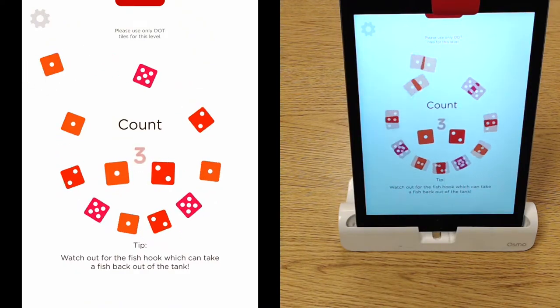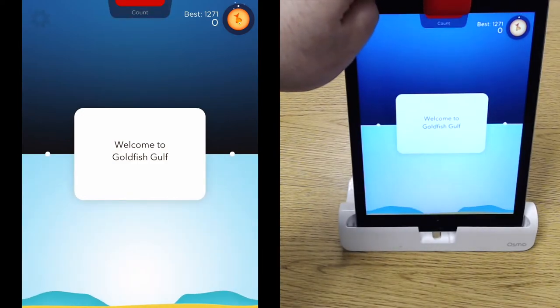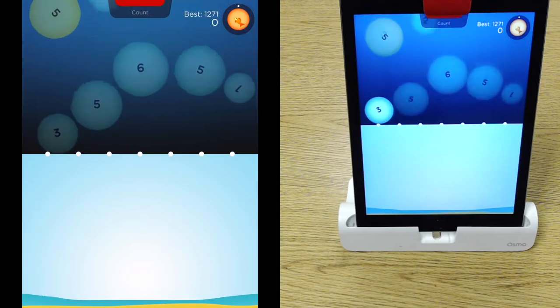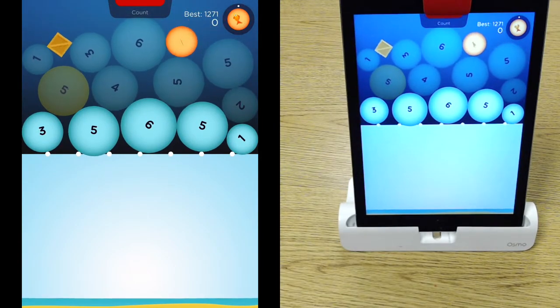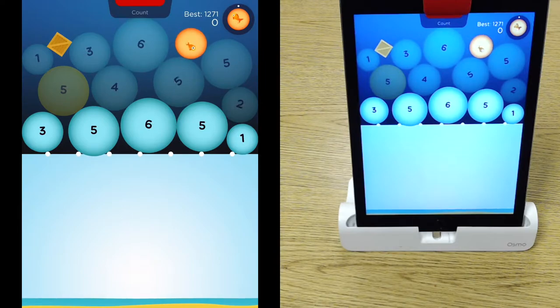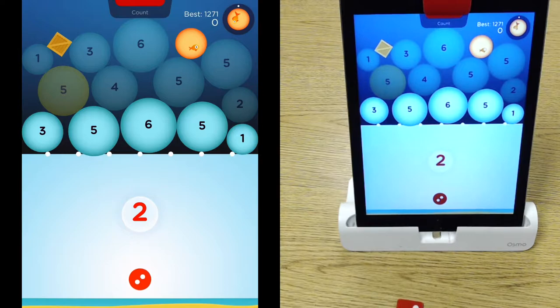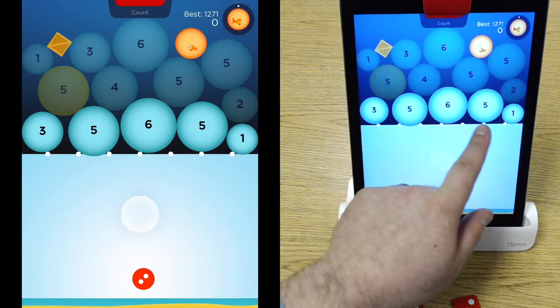And you can see all these little bubbles with numbers on it. And what you're going to do is try to create those numbers using the dice. So right now I'm aiming to get those bubbles popped first.